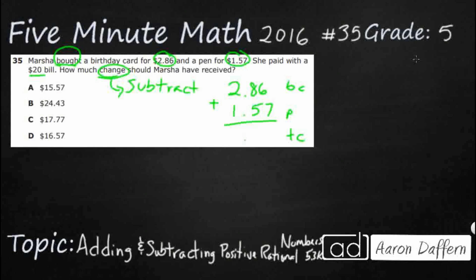So: 6 and 7 is 13, carry the 1. 1 and 8 is 9, and 9 and 5 is 14, carry that 1 again. Notice I just brought my decimal straight down. When adding or subtracting decimals, we line them up perfectly and bring the decimal straight down into our sum or difference depending on the operation. Then 1 and 2 and 1 is 4. So she spent a total of $4.43.